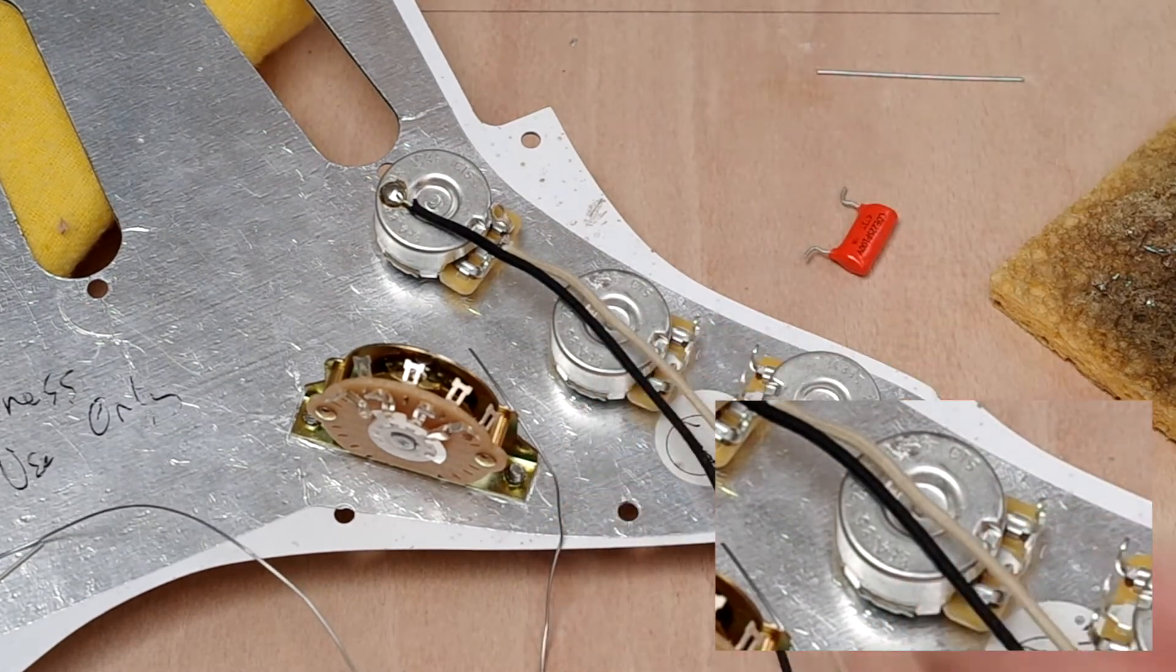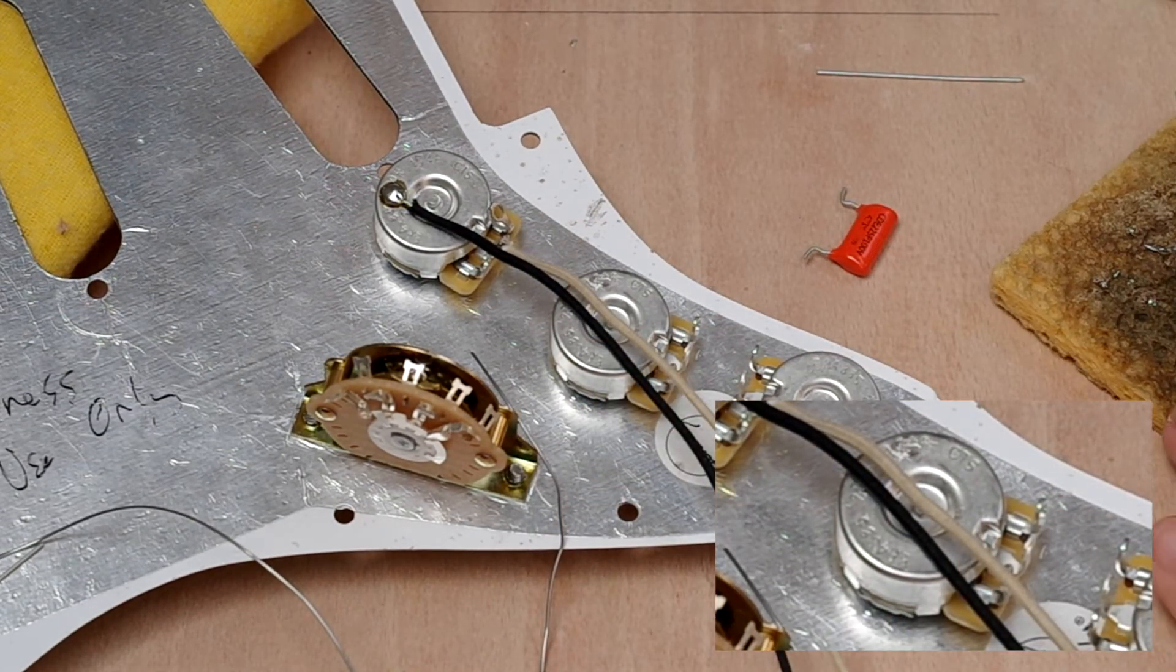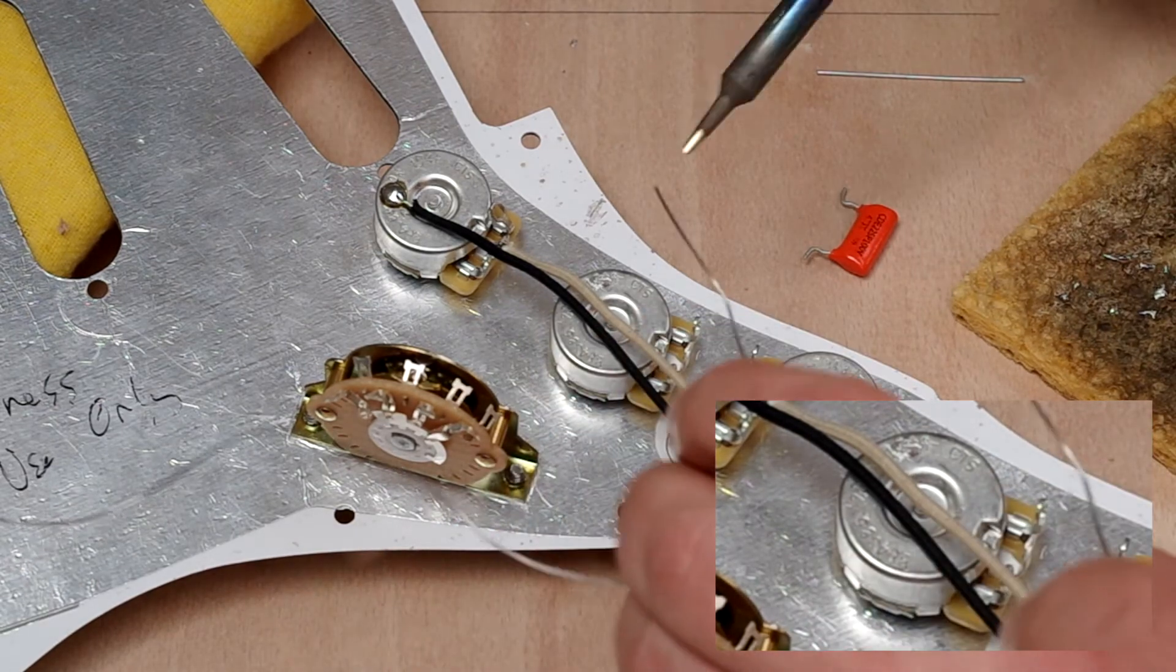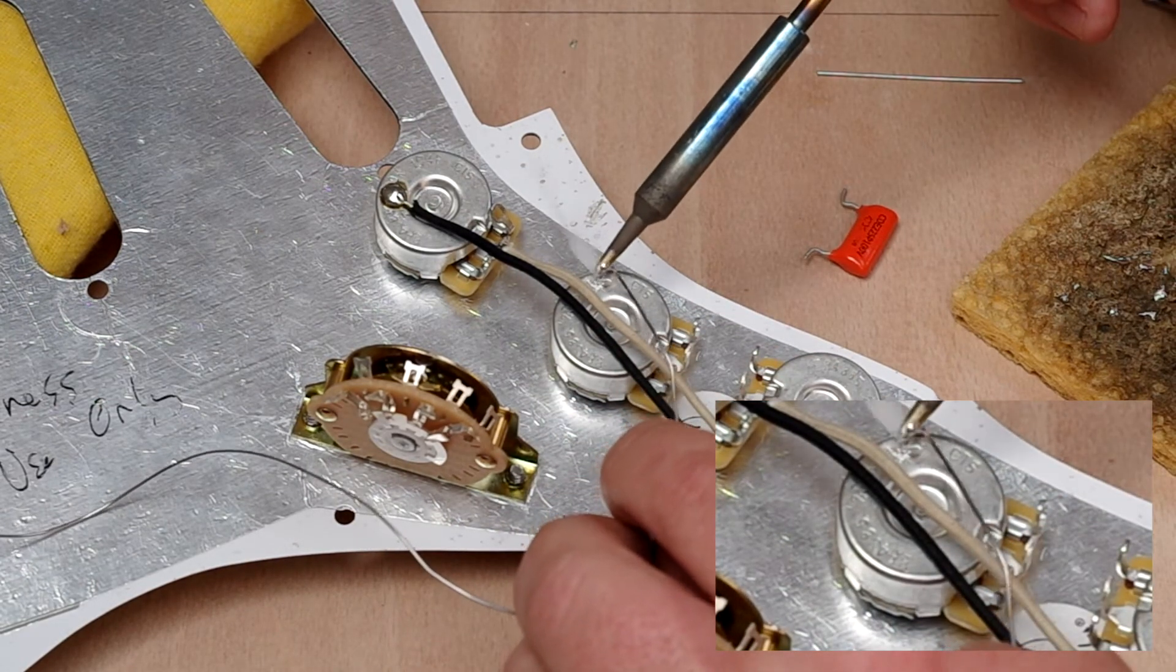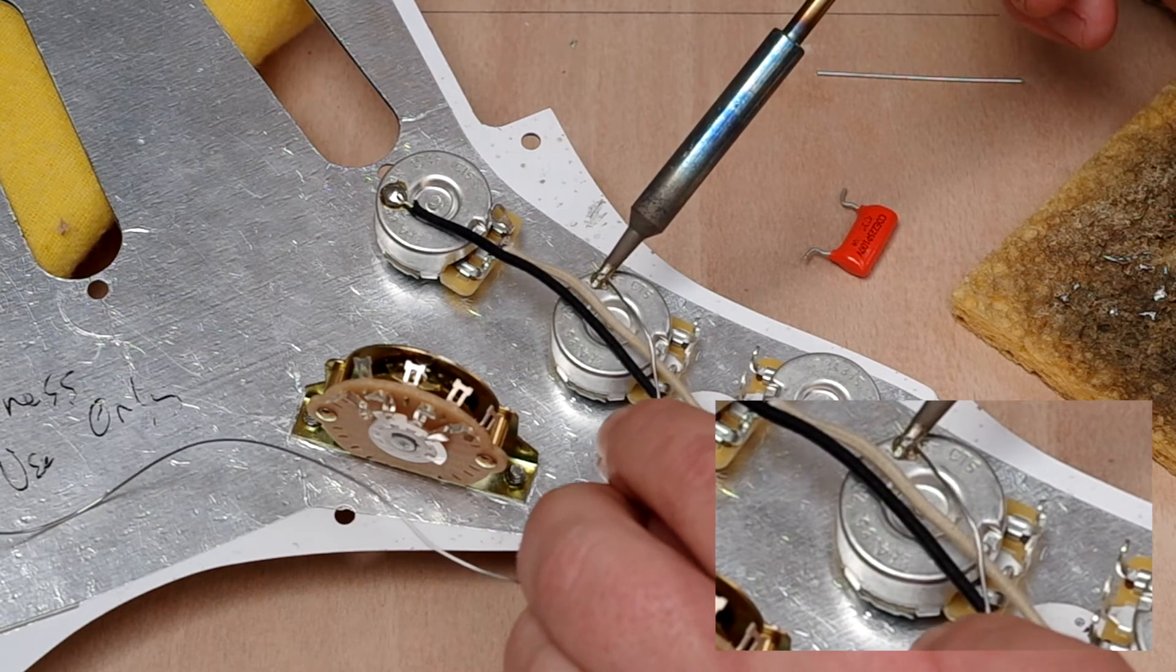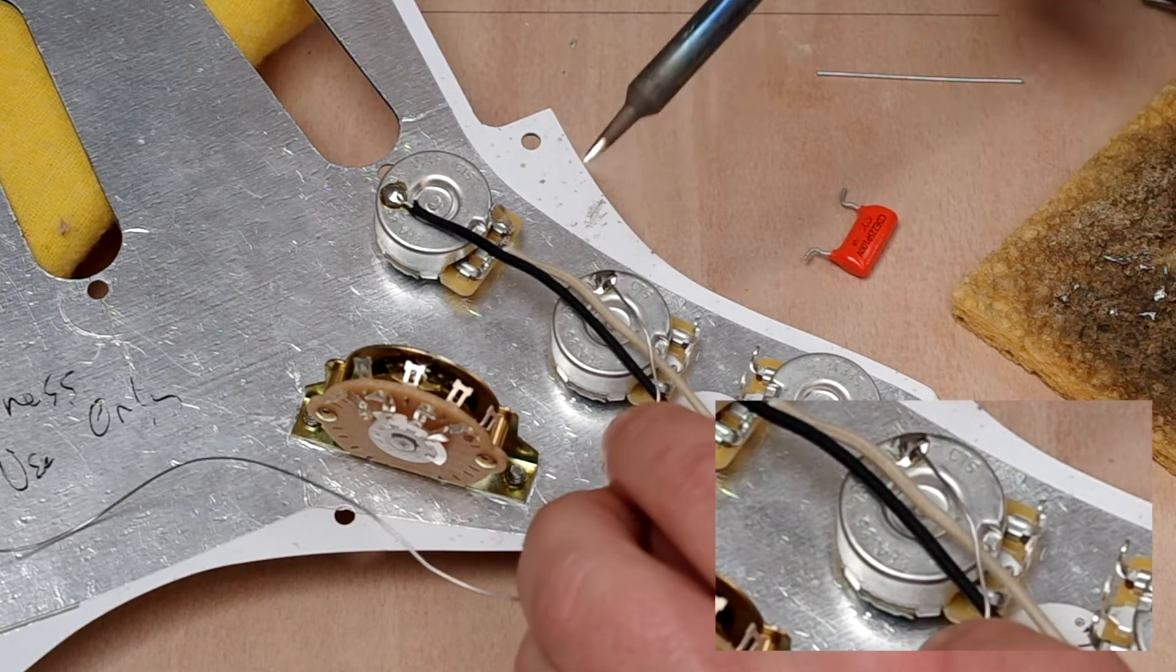And we're going to tin that again, we're going to tin both components first. So let's just clean that, a little bit of solder on the tip and then a little bit on where I've scored. And that's fine.